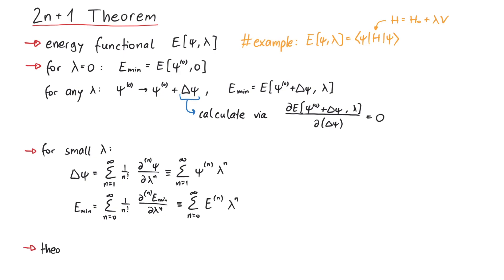The 2n+1 theorem now states that in order to calculate the 2n+1 order term of the energy correction, we only need to know the corrections to the wave function up to order n. A common application of this theorem is that even if you only know the wave function corrections to first order, you can still calculate the energy corrections to third order.